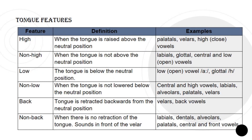The tongue features. High: when the tongue is raised above the neutral position — examples are palatals, velars, and high or closed vowels. Non-high: when the tongue is not above the neutral position — examples include labials, glottal, central and low, and open vowels.